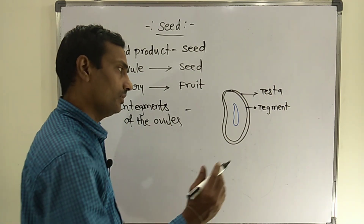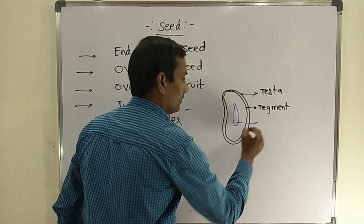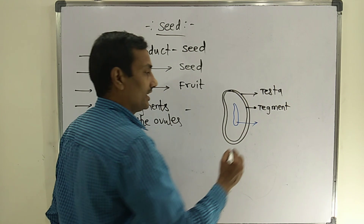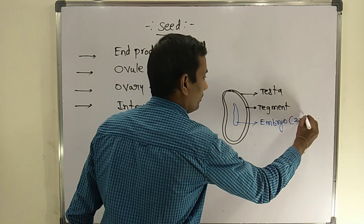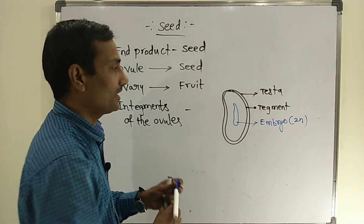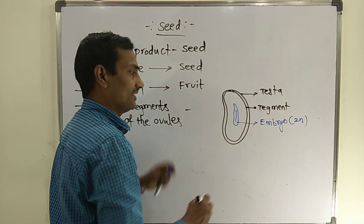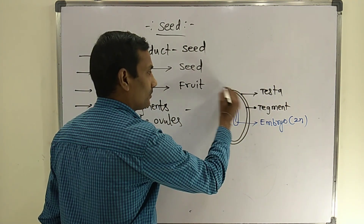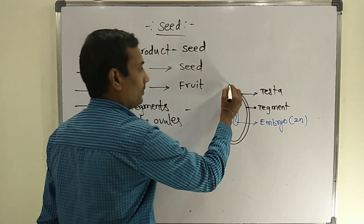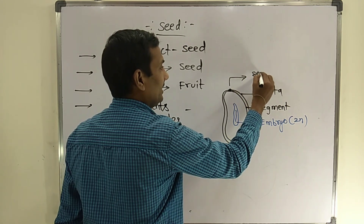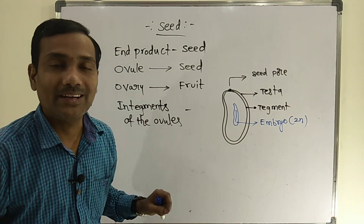Every seed consists of a well-developed structure called the embryo. The ploidy of the embryo is 2n. The embryo consists of one important structure called the embryonal axis. Seeds also have small minute apertures or pores called the seed pore, which is formed from the micropyle of the ovule.